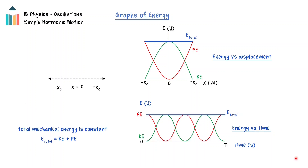The mechanical energy of a mass undergoing simple harmonic motion is the sum of the potential energy and the kinetic energy of the object, and is a constant. As the object moves, the energy is converting between kinetic and potential and back again. The total energy, potential energy, and kinetic energy of an oscillator can be shown as a function of time or as a function of displacement.